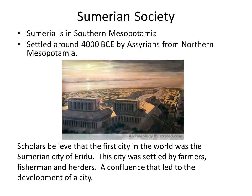Now, Sumerian society. The Sumerians were the most advanced, so we're going to focus on them. Sumeria is in southern Mesopotamia and was settled around 4,000 BCE. Scholars believe the first city in the world was the Sumerian city of Eridu. The city was settled by farmers, fishermen, and herders — farmers provided agricultural support, fishermen provided fish, and herders provided dairy, milk, and meat. This confluence of settlers led to the development of what we call the first city on Earth.